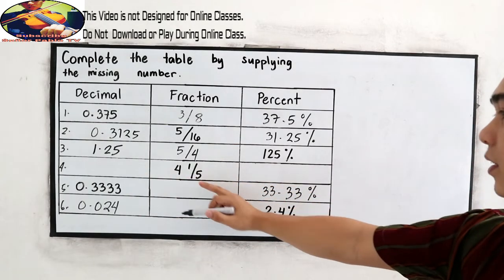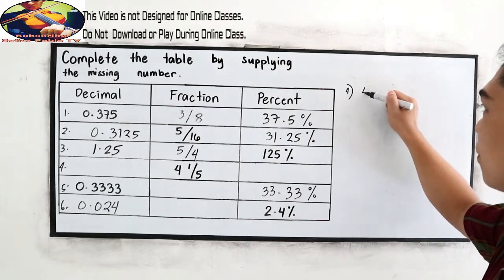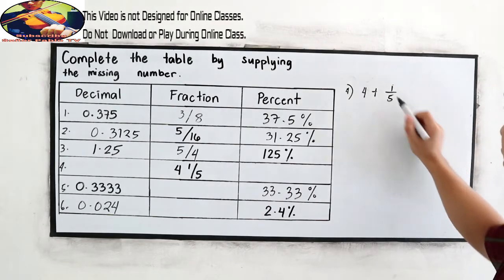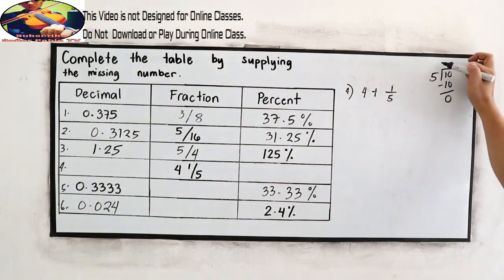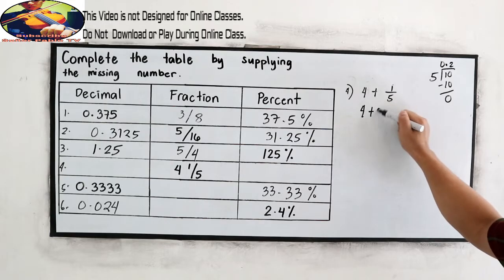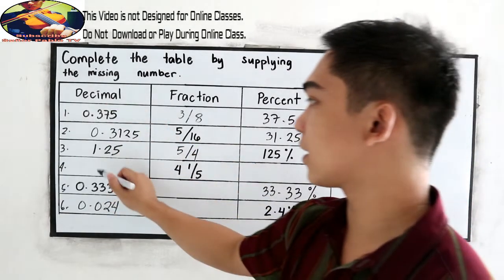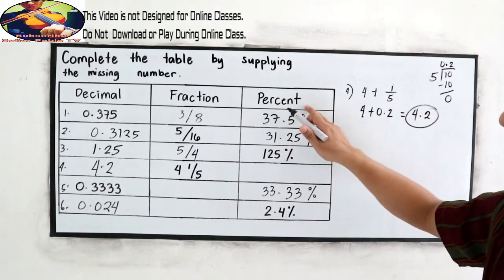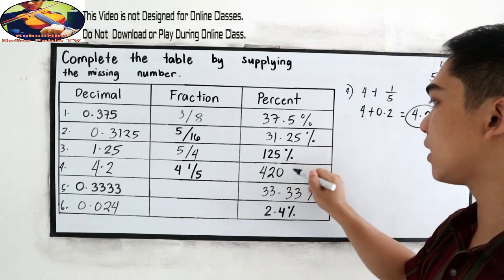Number 4, 4 and 1 fifth. First let us write into decimal. So that is 4 plus 1 over 5. So let us divide. 1 divided by 5 cannot be so write decimal and 0. So we have 10 divided by 5, so 2. 2 times 5, 10 subtract that is 0. So the equivalent of 1 over 5 is 0.2. So that is 4 plus 0.2 will give us 4.2. So 4 and 1 fifth in decimal is 4.2. Write into percent so move twice going right that is 420 percent.